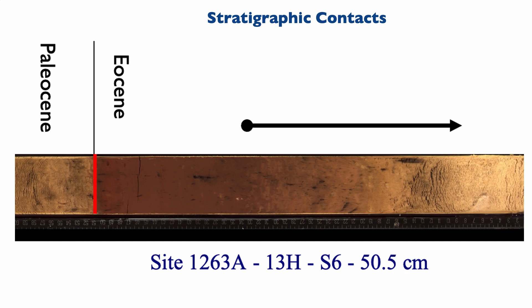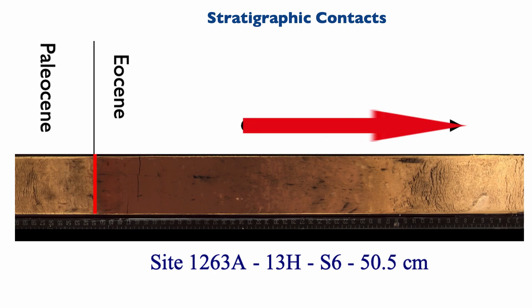Whereas in the early Eocene, we see a recovery of carbonate content in the deep sea, but that recovery is gradational. There is also no time gap, but the contact is harder to spot because it is an interval of progressively more carbonate content in the core. Now let's review the types of unconformity we can find in the geological record.